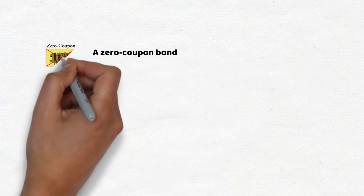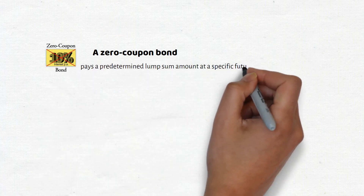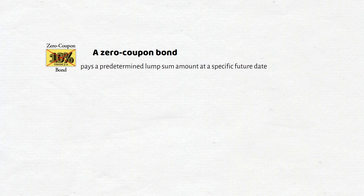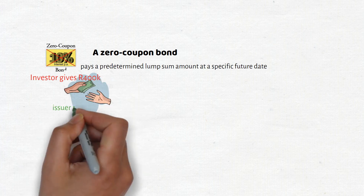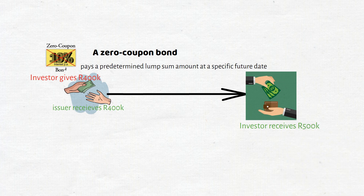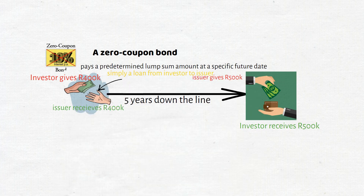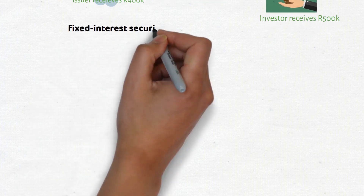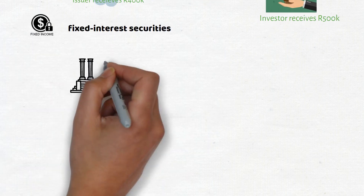A zero coupon bond is a type of financial instrument that promises to pay a predetermined lump sum amount at a specified future date. For instance, an investor may lend 400,000 to the issuer of a zero coupon bond; in return, the investor will receive 500,000 from the issuer in five years' time. This is essentially a loan from the investor to the issuer, which is paid back in a single payment of a fixed amount on a predetermined date.